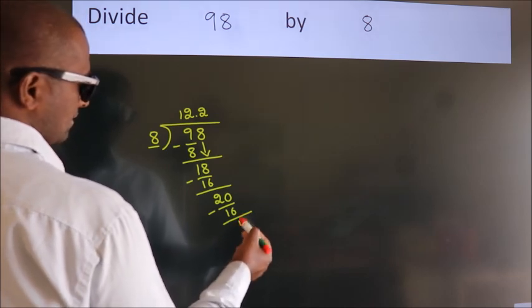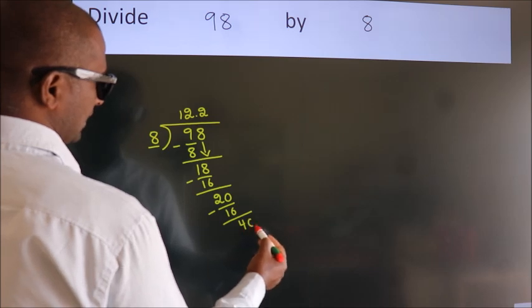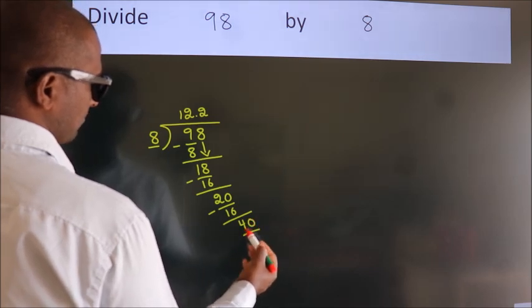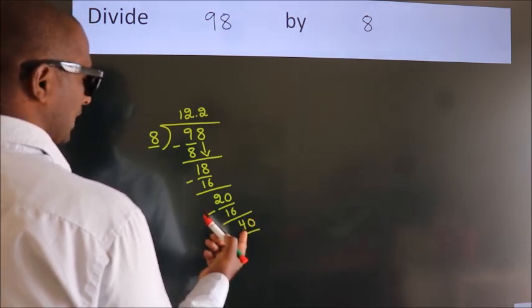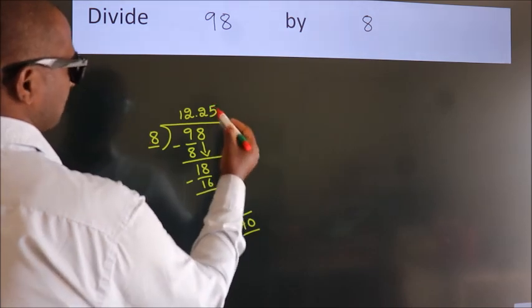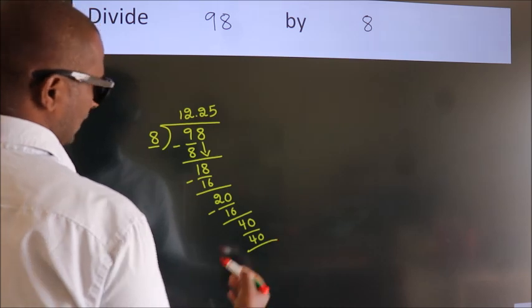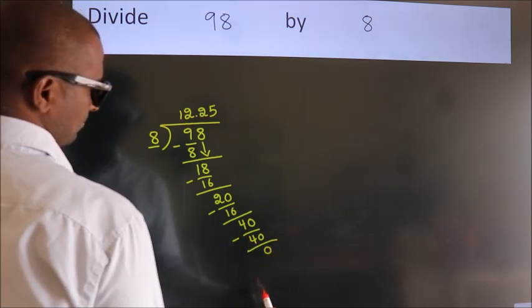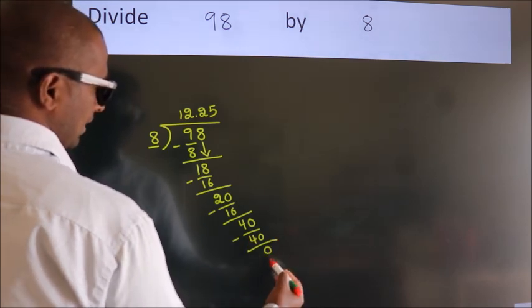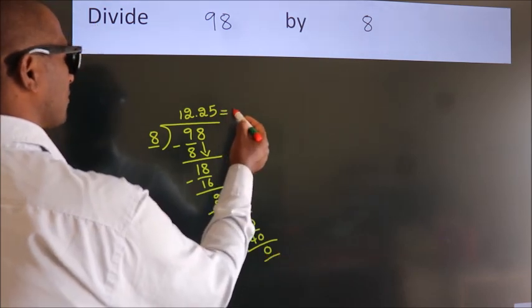After this, we already have the decimal, so directly we take 0, giving us 40. When do we get 40 in the 8 table? 8 times 5 is 40. Now we subtract and get 0. Here we got remainder 0, so this is our quotient.